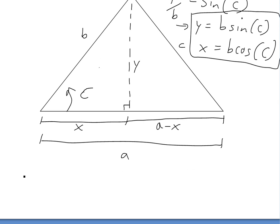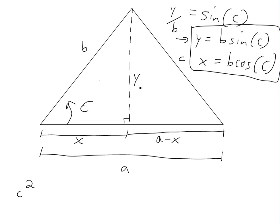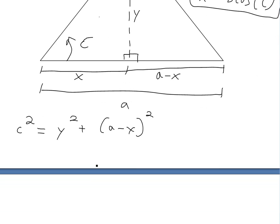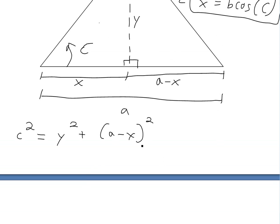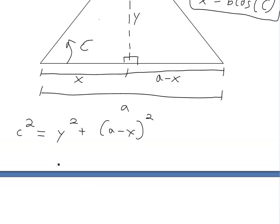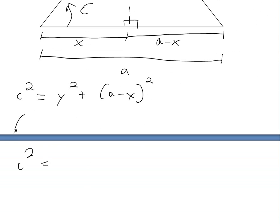Now, C squared — if we look at the Pythagorean theorem applied to the right triangle — C squared is equal to Y squared plus (A minus X) squared. If you expand this out, C squared equals Y squared plus A squared minus 2AX plus X squared.